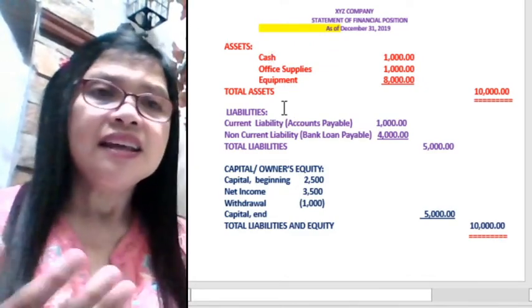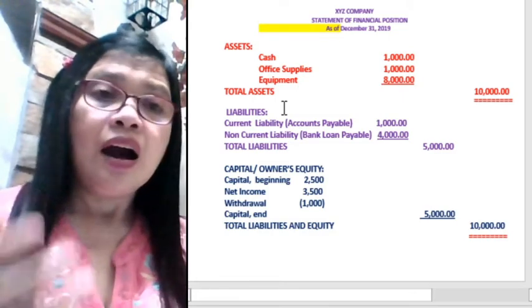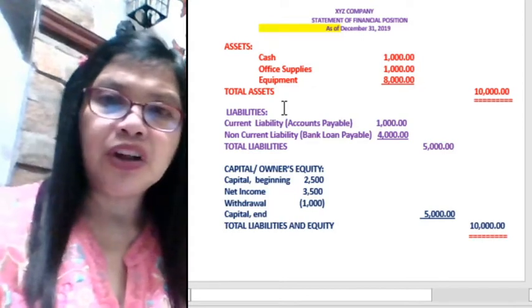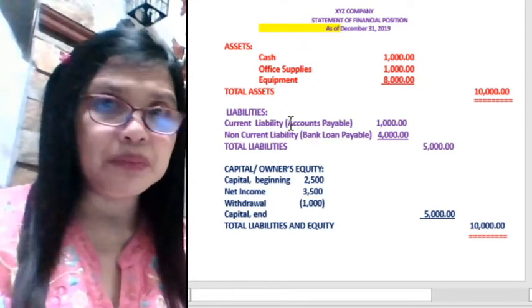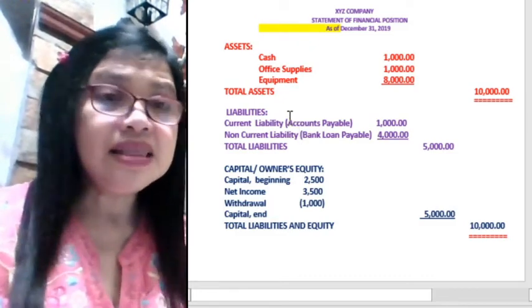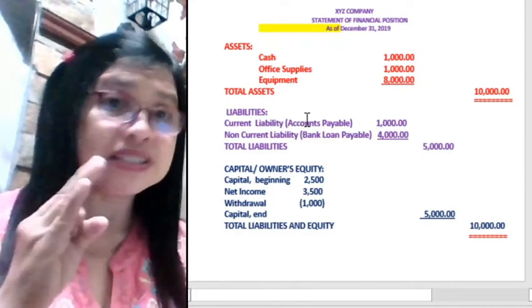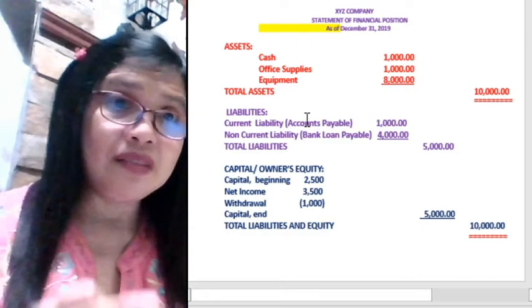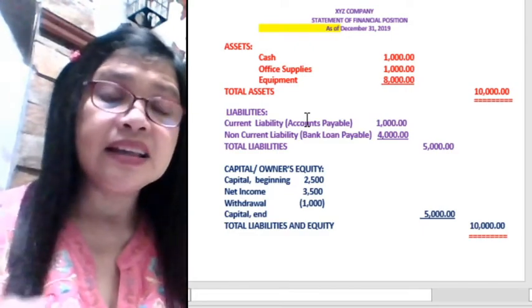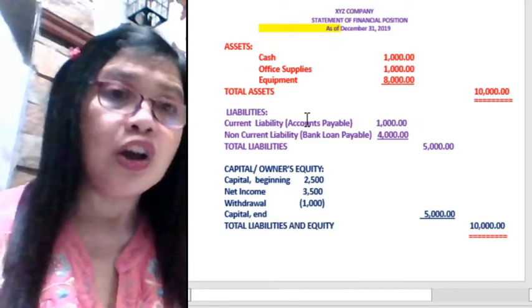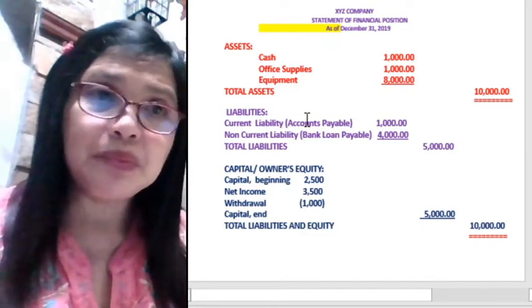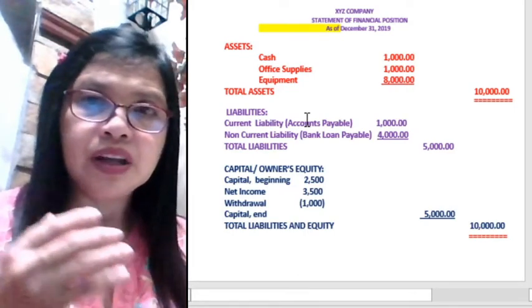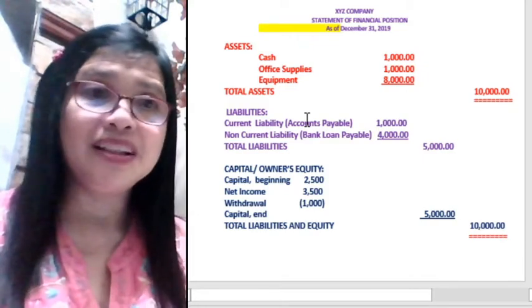Liabilities are what the company owes to third parties. Liabilities include current liabilities and non-current liabilities. Current liabilities include accounts payable, notes payable, and salaries payable — those liabilities payable within 12 months. Non-current or long-term liabilities include liabilities beyond one year, such as bank loans payable, mortgage payable, and bonds payable.